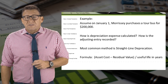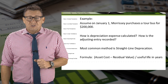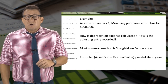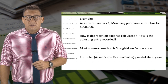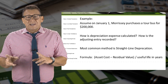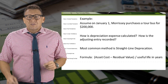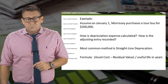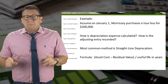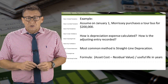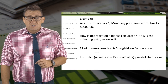Let's learn how to depreciate this bus using the simplest method and then record that in an adjusting entry. The most common method of depreciation is known as the straight-line method. This method spreads the cost of a long-lived asset evenly over the asset's useful life. The formula is asset cost minus residual value, sometimes called salvage value, divided by the useful life in years.